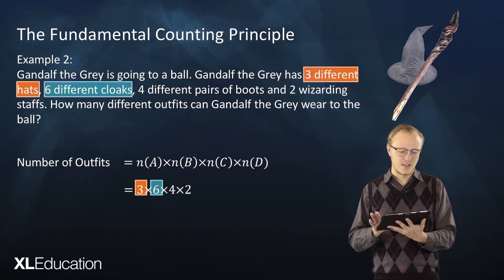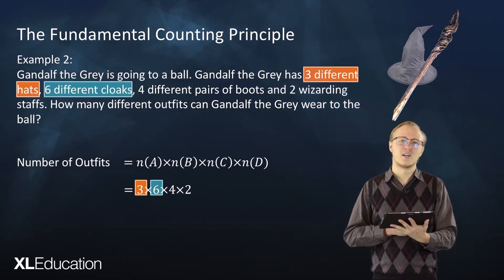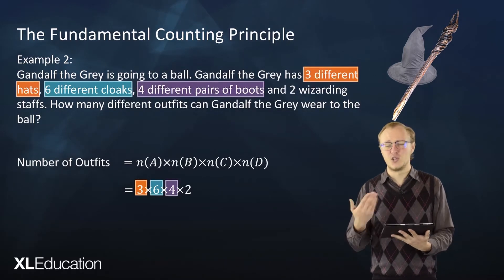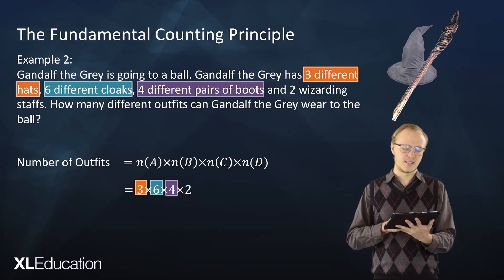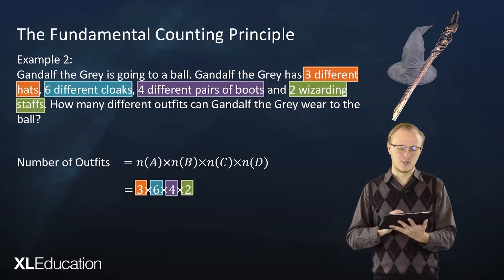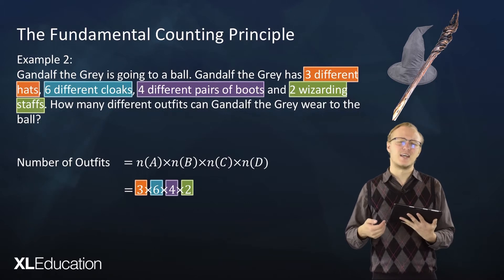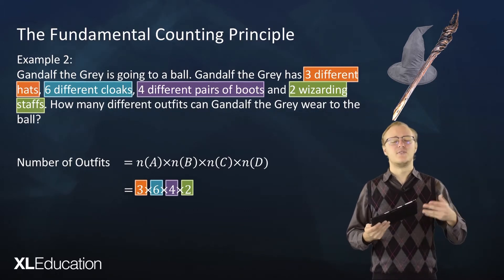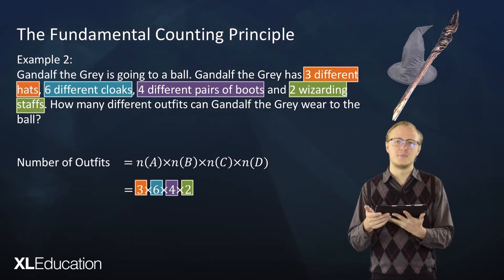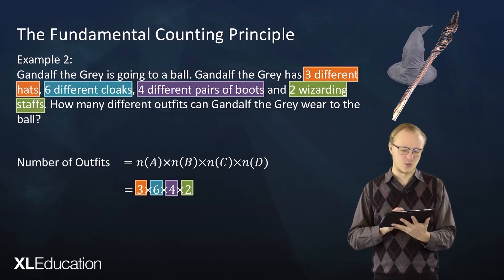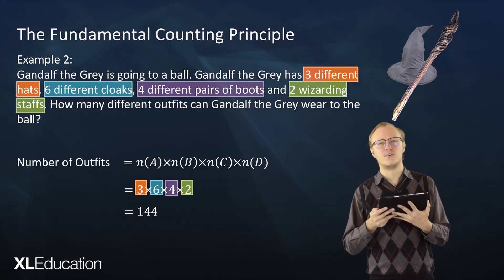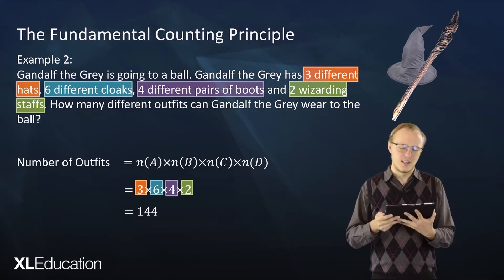Next is choosing a cloak — he can do that in six ways. Then he has to choose a pair of boots — he can do that in four ways. Then he has to choose a staff — he can do that in two ways. So the total number of outfits is three times six times four times two, which equals 144 different outfits that Gandalf can choose to look very fabulous at the ball.